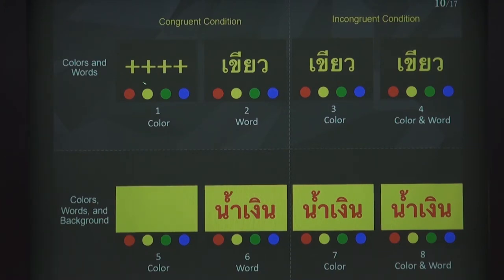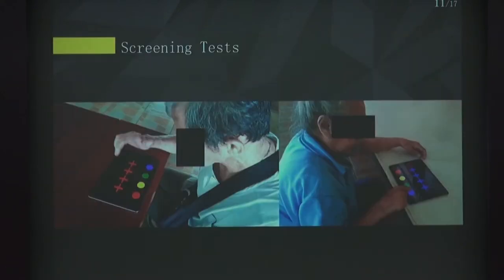The Stroop effect covers levels one, two, and three. From levels four through eight, we developed those ourselves for my PhD dissertation. This is a screening test. We use the application on an iPad because we think the smartphone is too small for aging people, so we adapted it for the iPad.